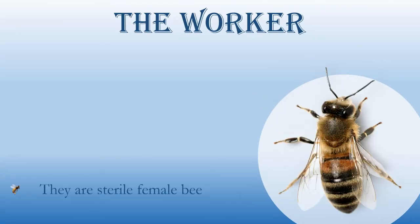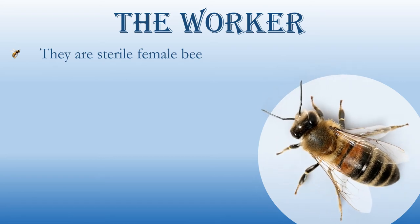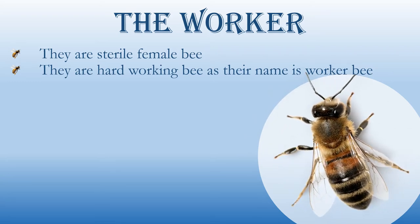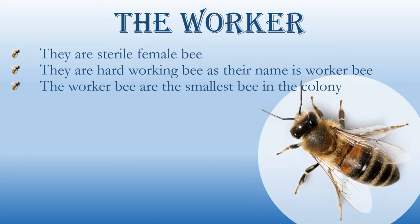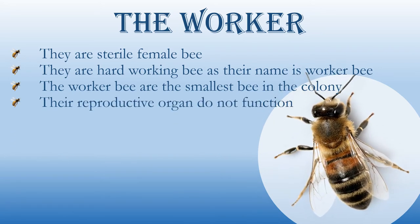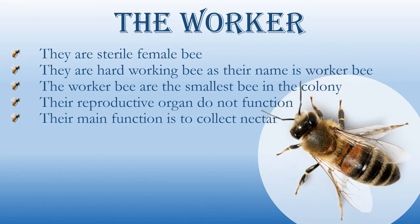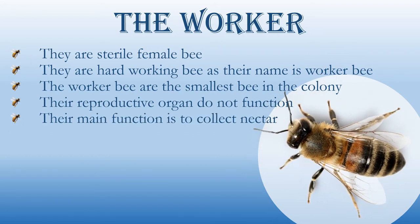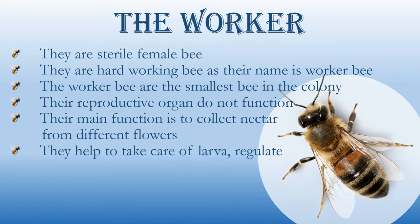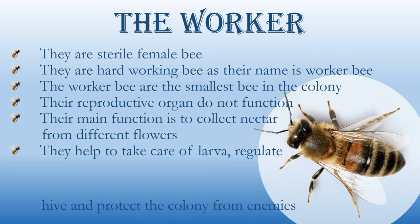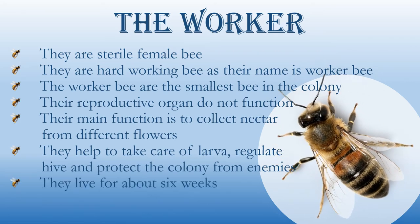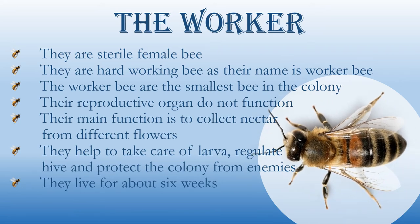Worker bees are sterile female bees and are the smallest bees in the colony. Their reproductive organs do not function. Their main function is to collect nectar from flowers. They also take care of larvae, regulate the hive, and protect the colony from enemies. Worker bees live for about six weeks.